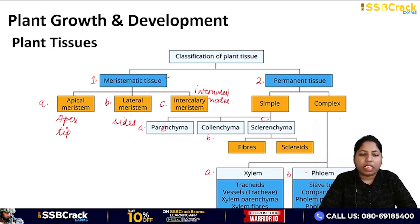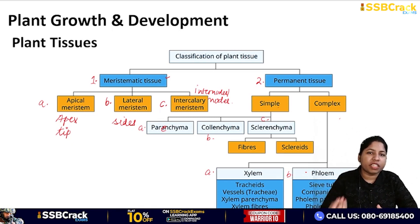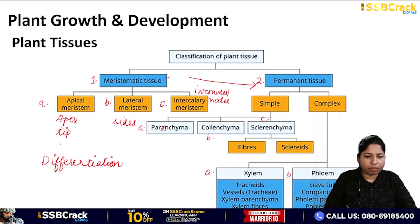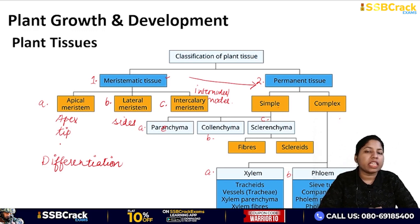Meristematic tissue has one role — to promote growth — because the cells are continuously dividing. But how are permanent tissues formed? The fact is, meristematic tissues ultimately convert into permanent tissues. This process is called differentiation. In this process, meristematic tissue which is continuously dividing, at a point stops dividing and gets converted to permanent tissue, being given a specific role or function.